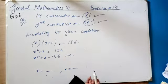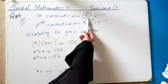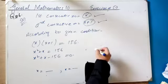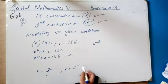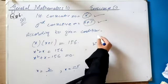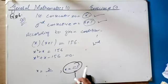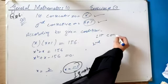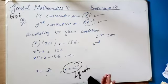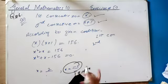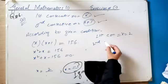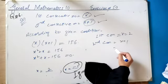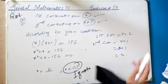If a negative value comes for x, ignore it — just as we did in the previous question, we ignore negative values. So first consecutive number will be the positive x value. For example, suppose x = 2: first consecutive = 2, and second consecutive = x + 1 = 2 + 1 = 3.